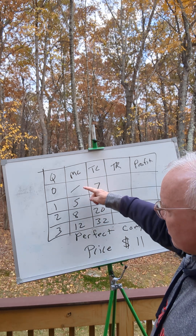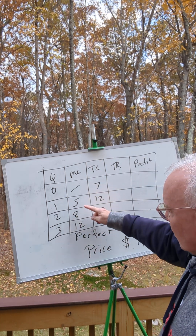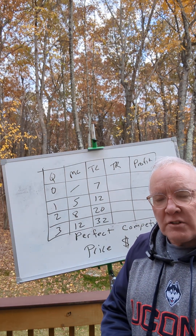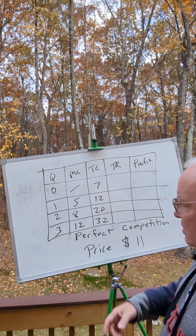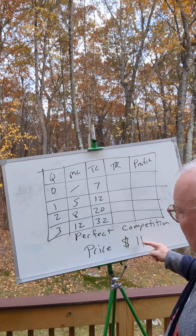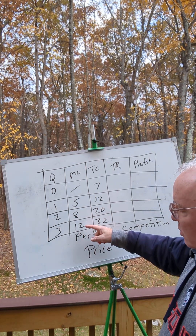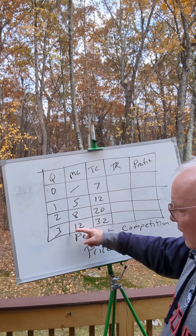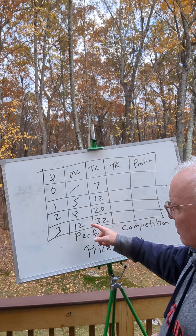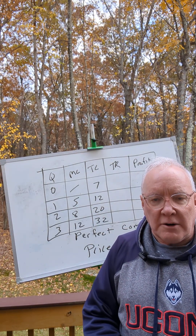If we just look down the marginal cost curve, we can see that the maximum quantity where the marginal cost is less than or equal to the price is quantity 2, because the marginal cost is 8, which is less than the price of 11. And if we were to produce the third item, the marginal cost of the third item is $12, the price is 11, so the marginal cost is greater than the price, so we would not want to produce the third item.